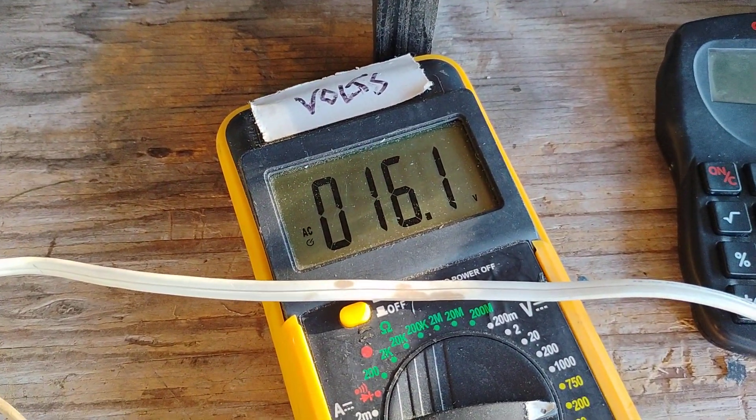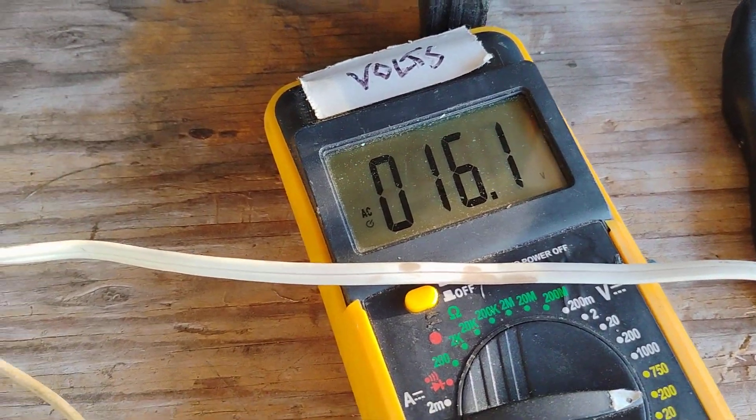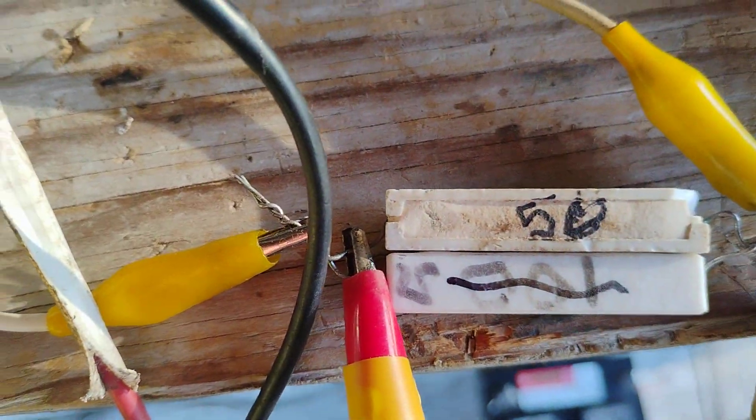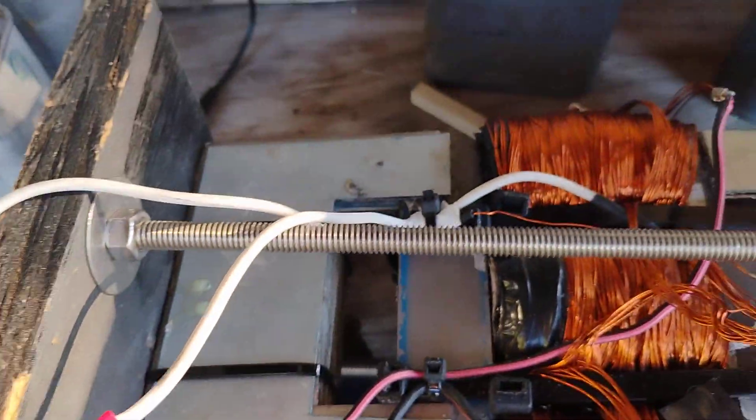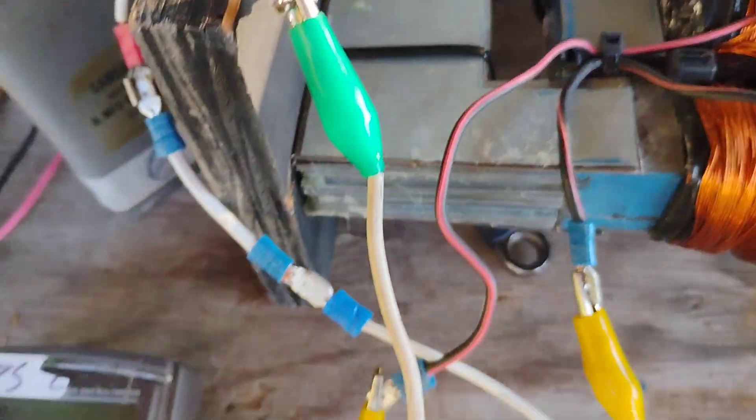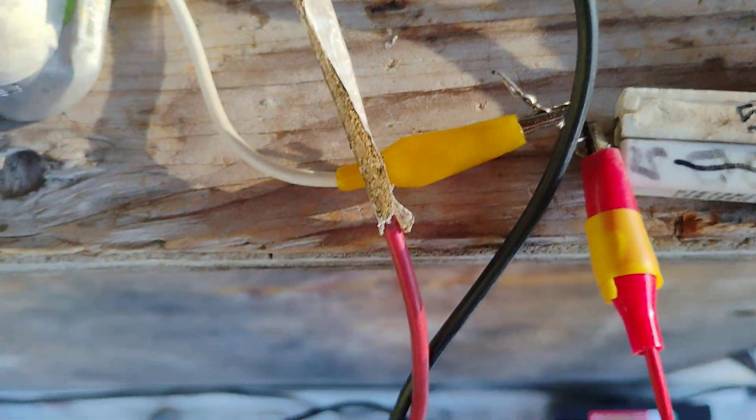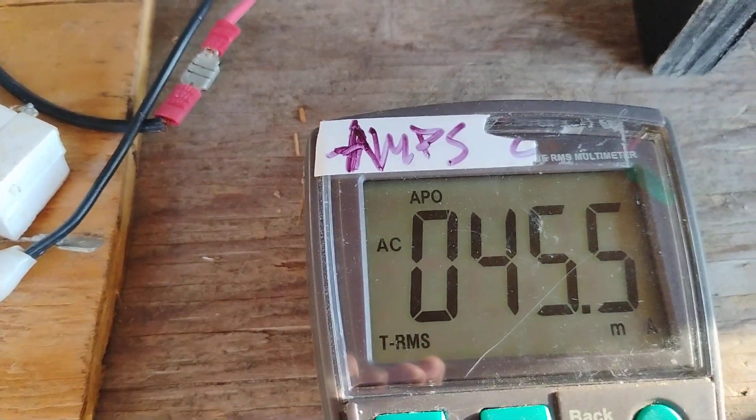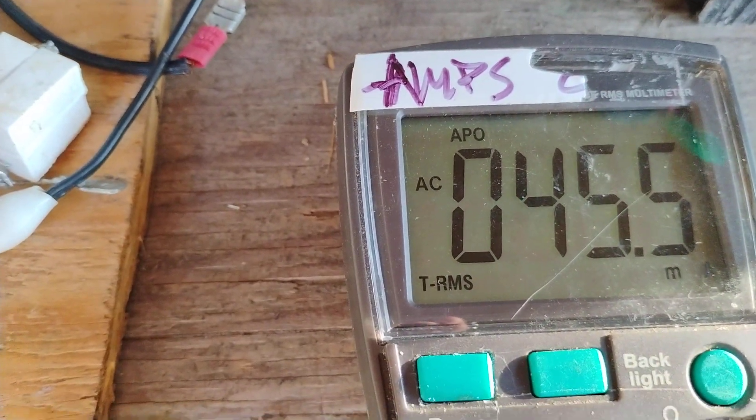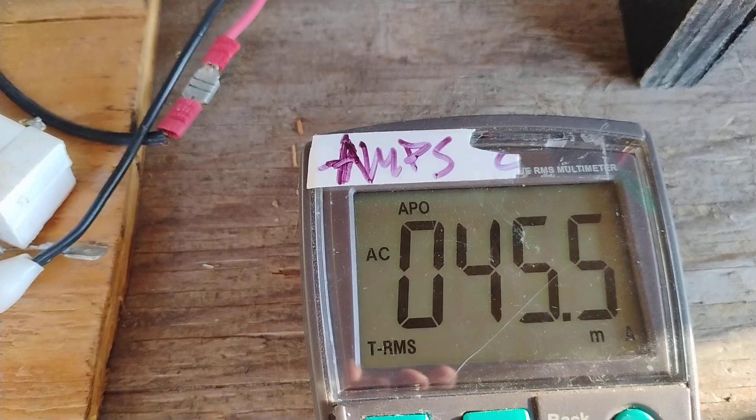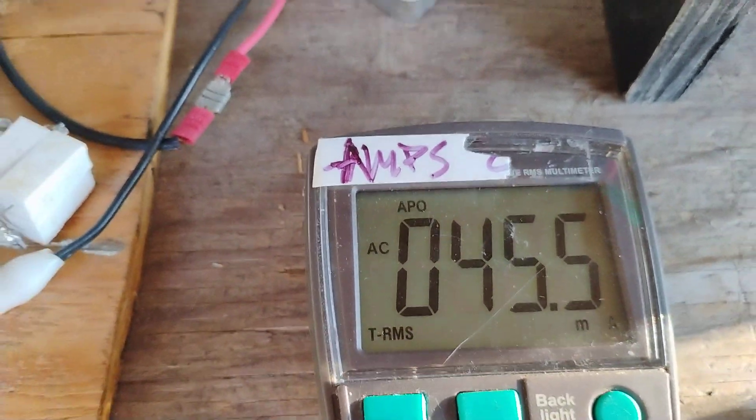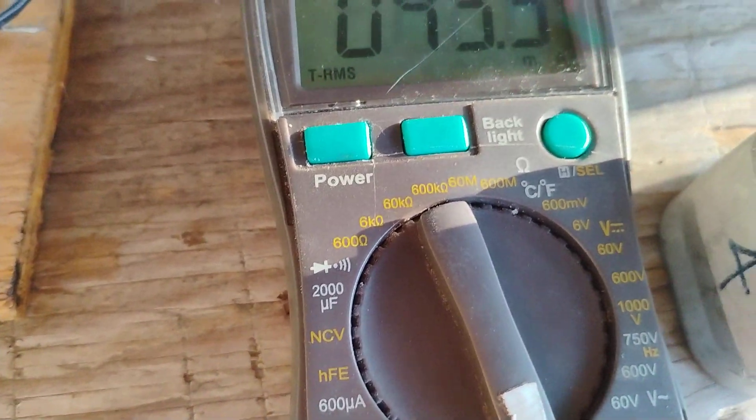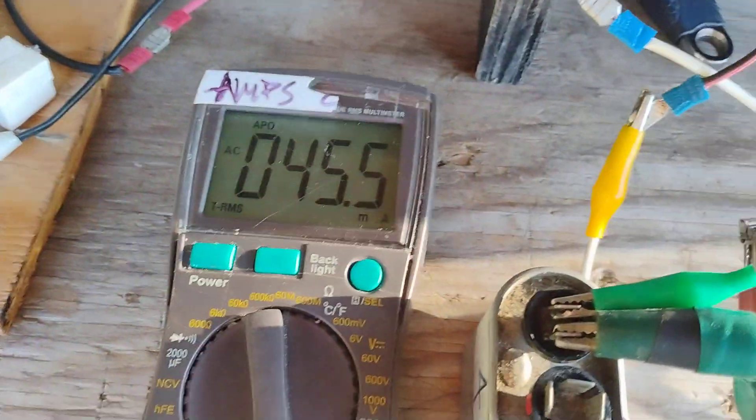Here's the output 16.2 or 16.1 across a 50 ohm resistor. This is the two secondaries in series across this. Now we have 45.045, 45 milliamps going in. Now, this is without the series cap.